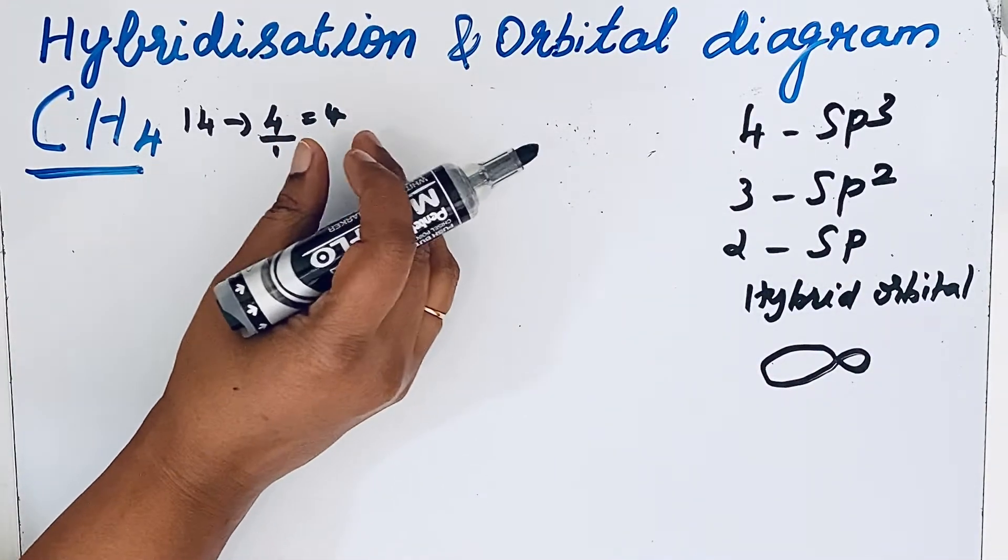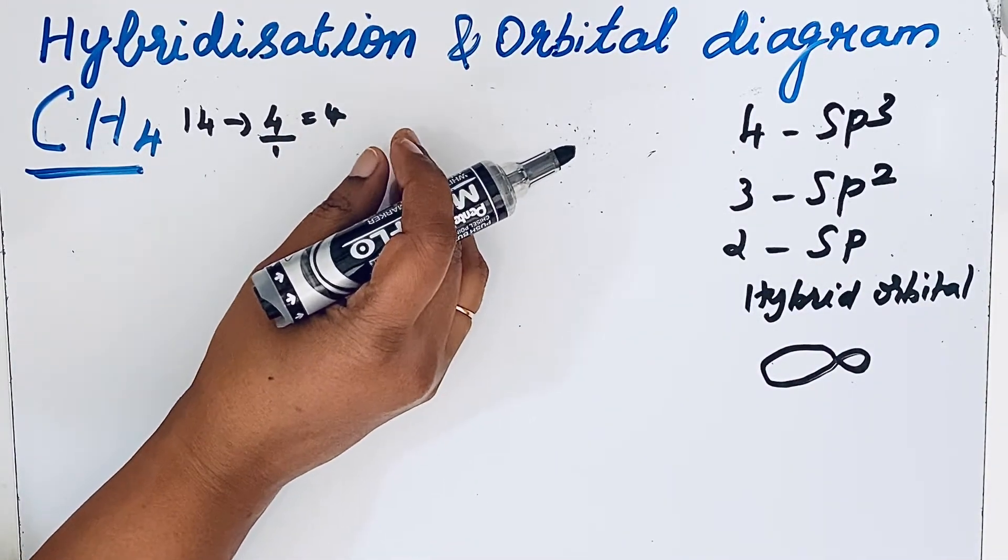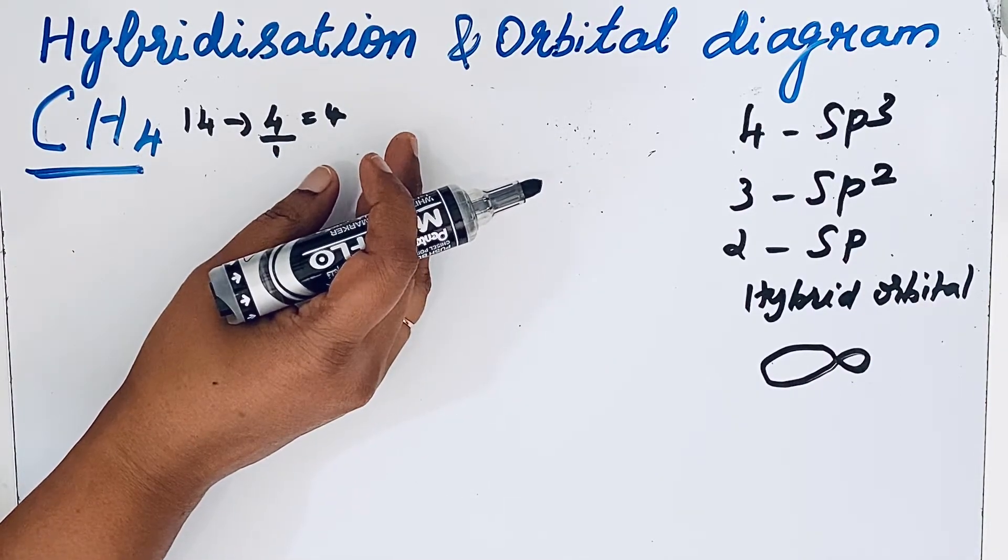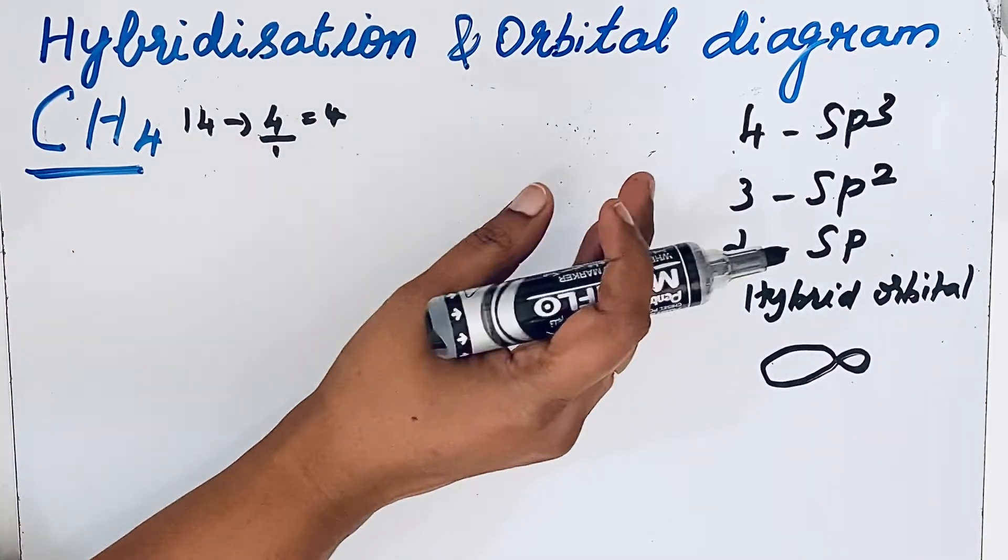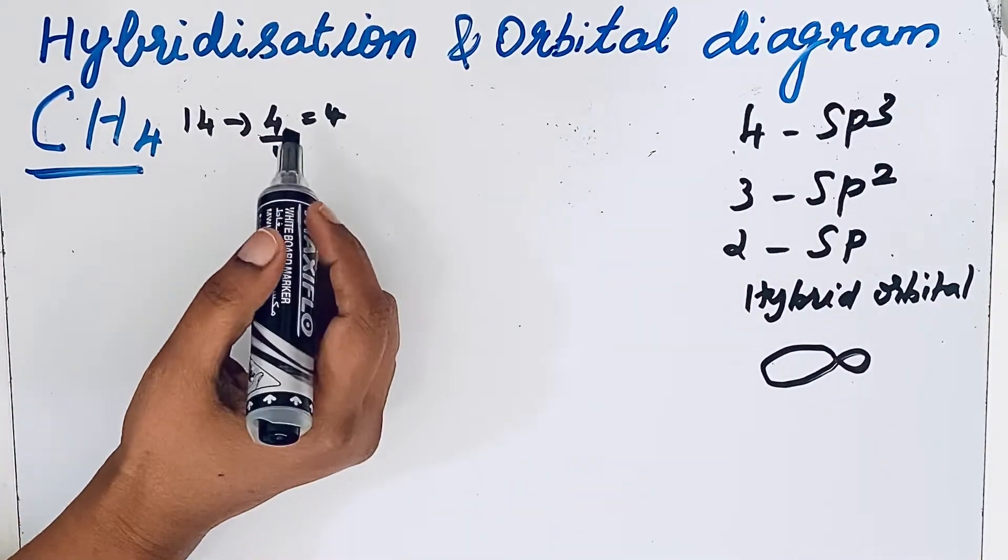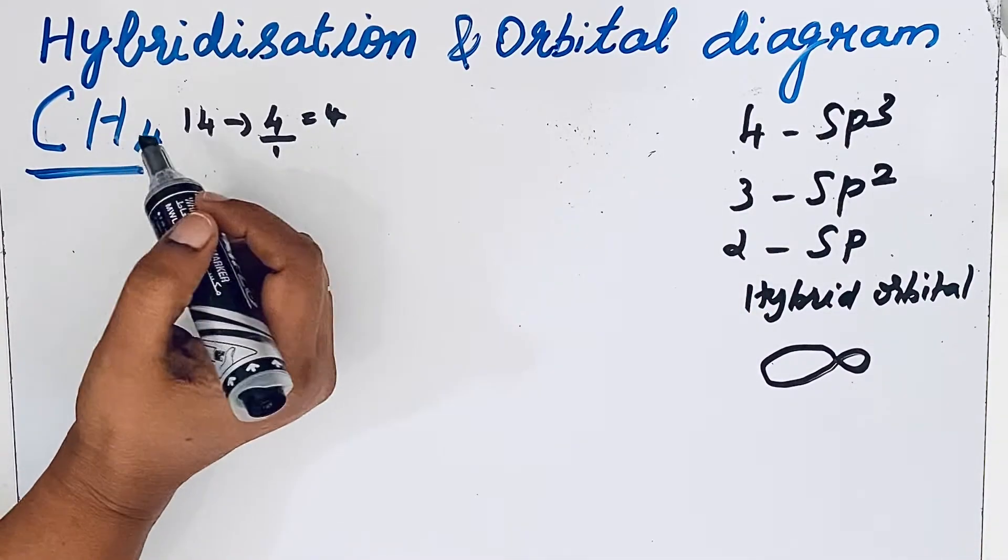This method of finding the hybridization is so simple but interhalogen compounds and some sulfur and nitrogen compounds do not come under this easy method. So for that, 4 gives sp3 hybridization.